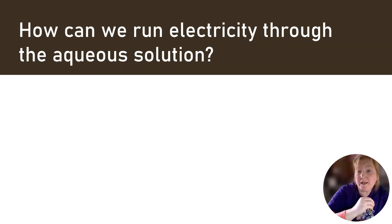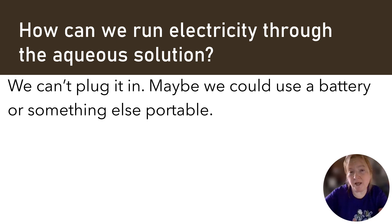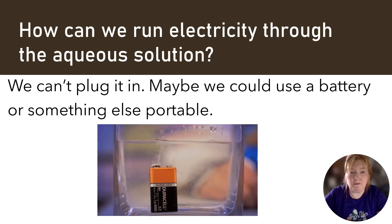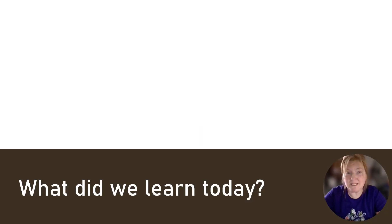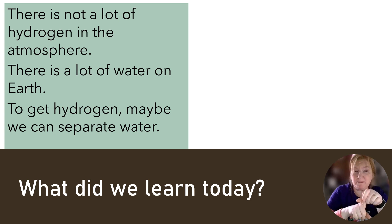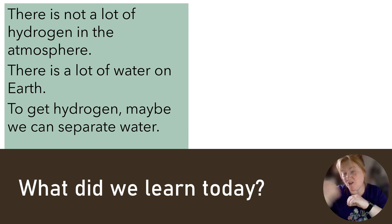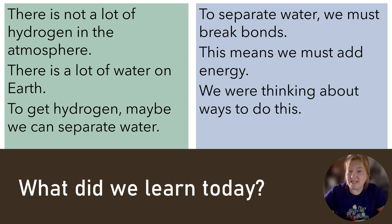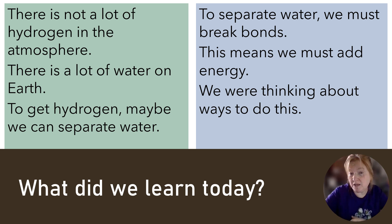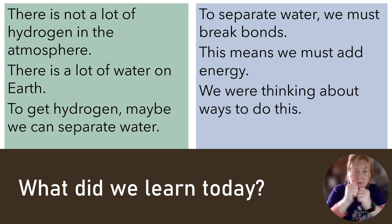How can we run electricity through the aqueous solution? We can't plug it in — maybe we could use a battery or something else that's portable. So, what did we learn today? There's not a lot of hydrogen in the atmosphere, but there is a lot of water on Earth. To get hydrogen, maybe we can separate water and keep the hydrogen part. To separate water we would have to break bonds, which means we'd have to add energy. We were just thinking about different ways we could do this — where could the energy come from in order to break those bonds in water?